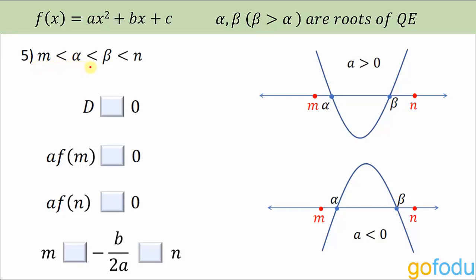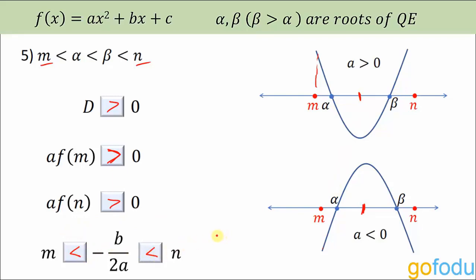Next question: both roots lie between two points m and n. D is greater than zero. a·f(m) is greater than zero — when both are positive the product is positive, and when both are negative the product is also positive. Similarly, a·f(n) > 0. The vertex point −b/2a lies between m and n for both graphs, so m < −b/2a < n.